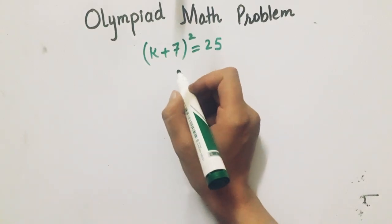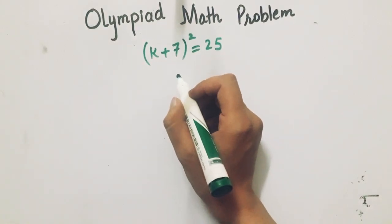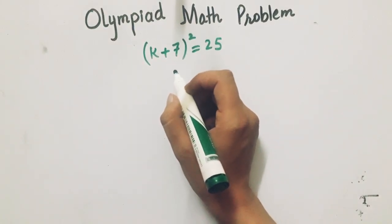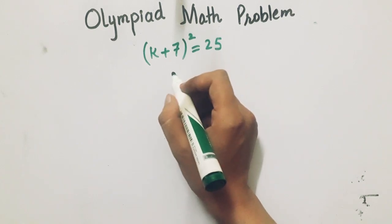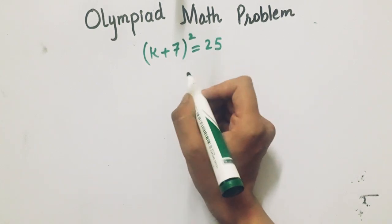Welcome back to Math Solver 1117, where math becomes easy and fun. In today's math problem, we have x plus 7, whole square, equals 25.